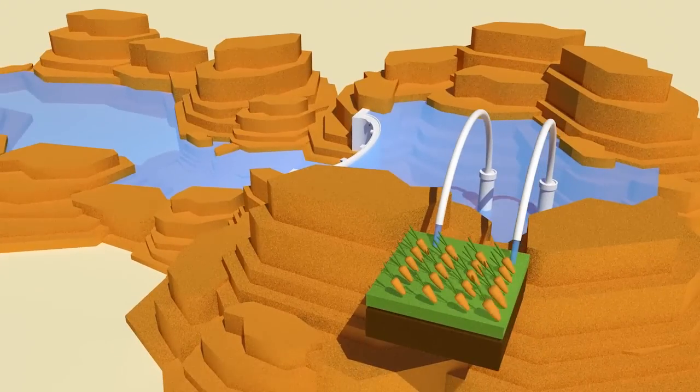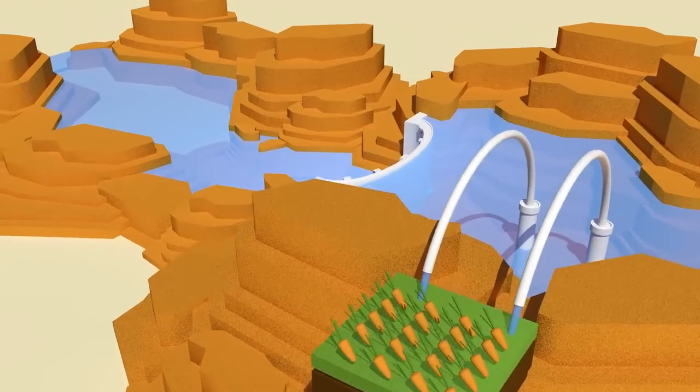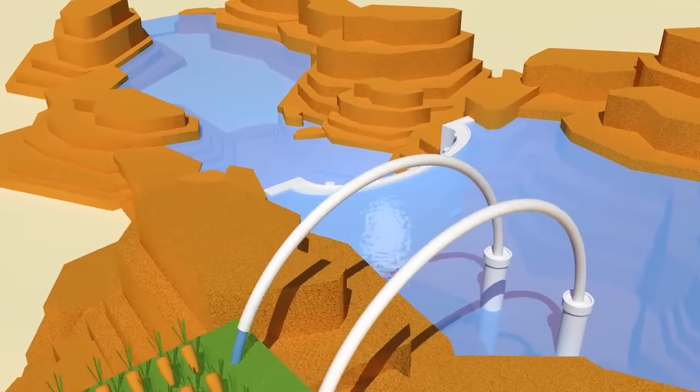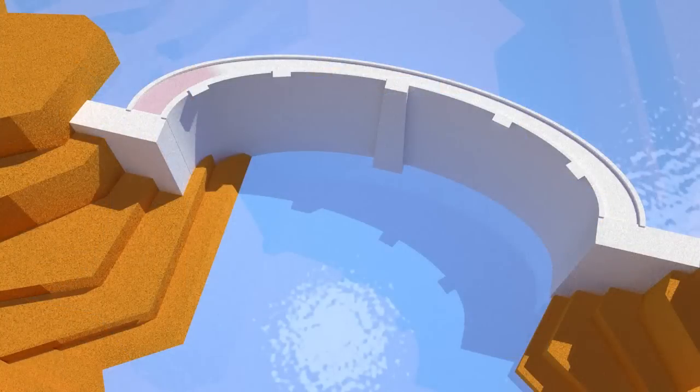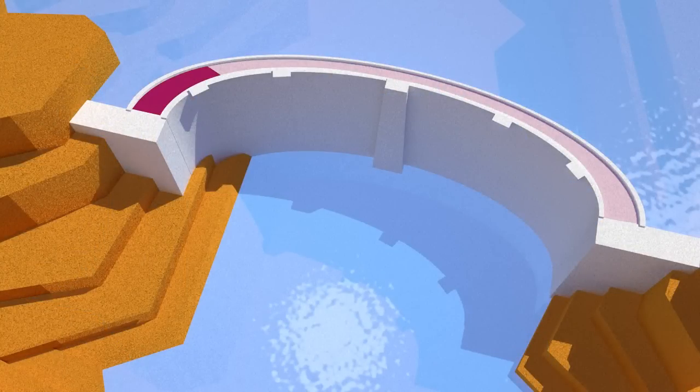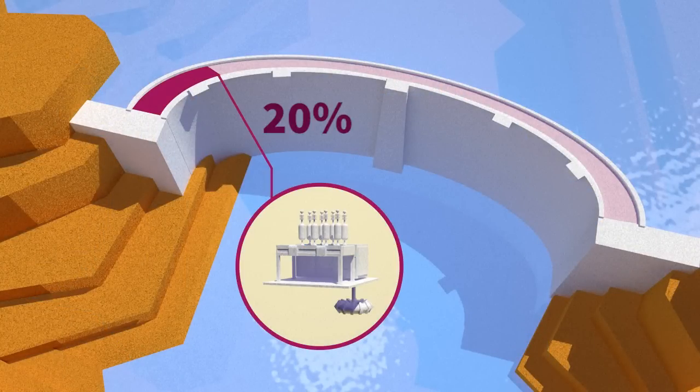By regulating the water supply, dams moderate the ferocity of floodwaters and make it possible to navigate along the watercourse. Nearly 20% of dams are connected to hydroelectric power plants, the world's number one source of renewable electricity.